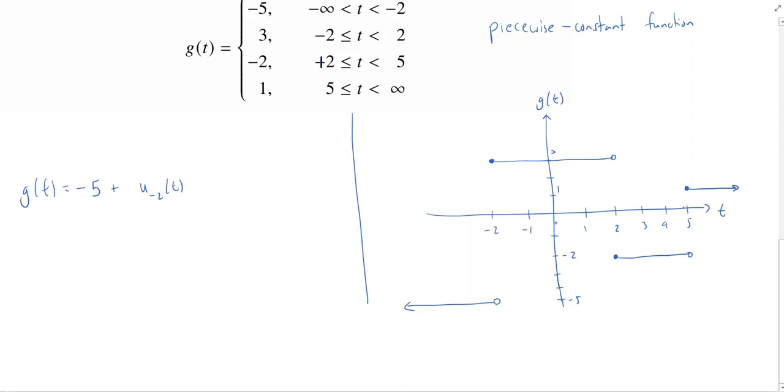And what happens at negative two? Well, it goes from negative five all the way up to three. So that's a difference of eight. So we need to go up by eight. Now it's going to stay there until we get to two, and then it's going to go down. So let me put a minus and we're going to have a u_2. Now, how far is it going to go down? It's going to go down from three to negative two. So that's a drop of five.